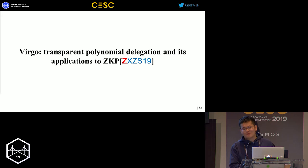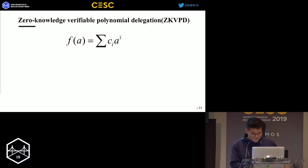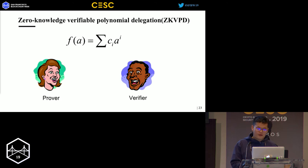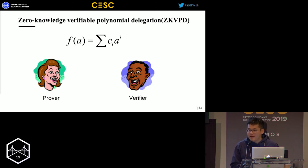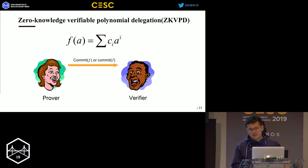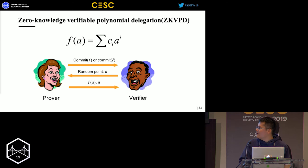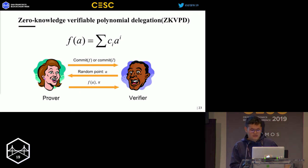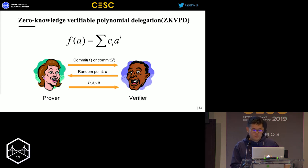To solve the problem in Libra, we propose a new zero-knowledge verifiable polynomial delegation without trusted setup, which we call Virgo. Transparent ZKVPD means the prover convinces the verifier of the evaluation of a polynomial F on a random point A — that is F(A) — without trusted setup. The prover commits the coefficients of F, then receives a random point A from the verifier, computes F(A) along with a proof pi, and sends them back. The verifier checks it, and zero-knowledge means the verifier learns nothing about polynomial F after this process.